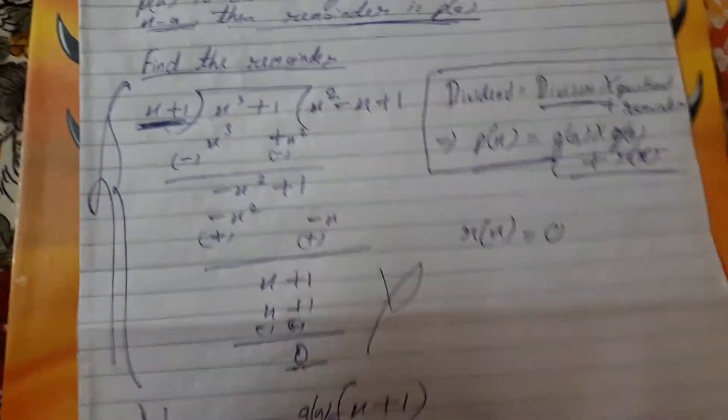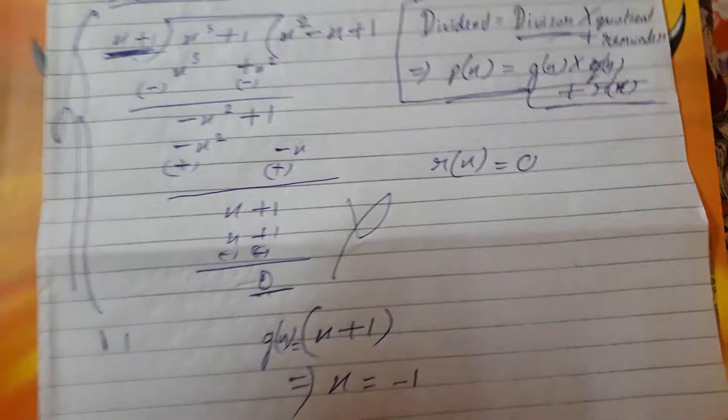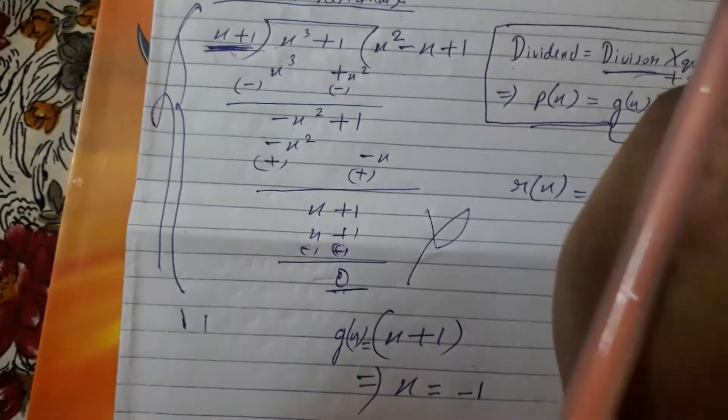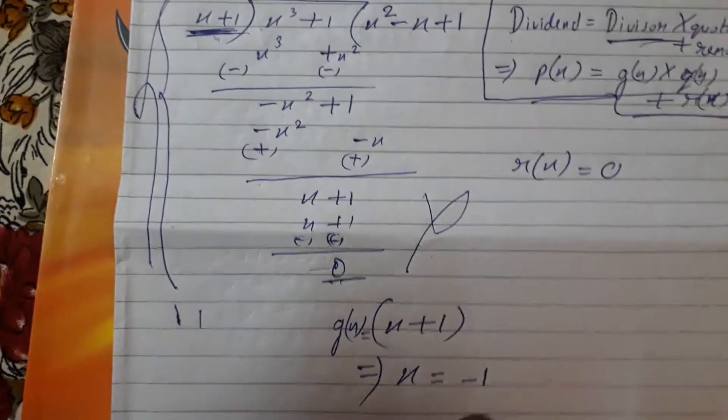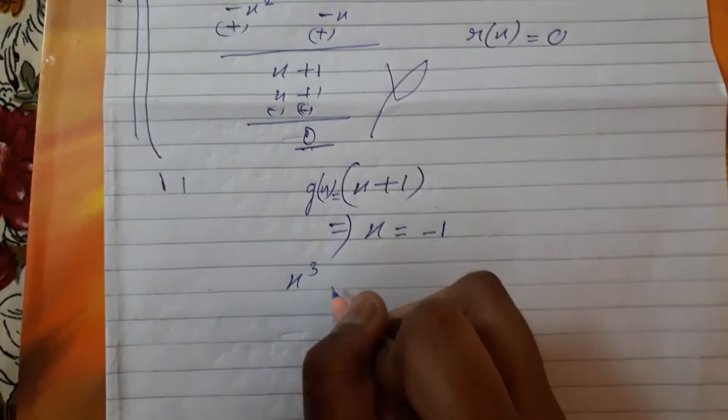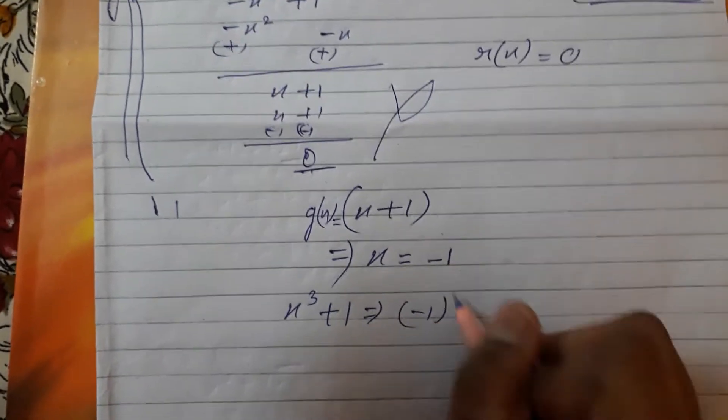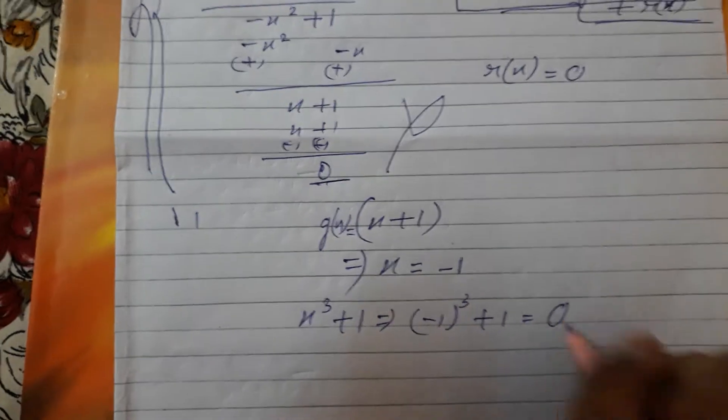Now put the value in the dividend. What is your dividend given? x cubed plus 1. Put minus 1: minus 1 cubed plus 1 equals 0.